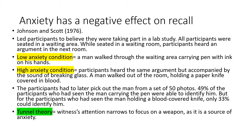Later on, the participants had to pick out the man from a set of 50 photos. 49% of participants who had seen the man carrying the pen were able to identify him, but only 33% of participants in the high anxiety condition — who had seen the man holding a blood-covered knife — could identify him. This introduces the term tunnel theory: witnesses' attention narrows to focus on a weapon as it is a source of anxiety, so they didn't focus on the man's face.